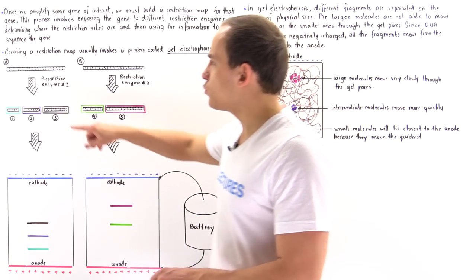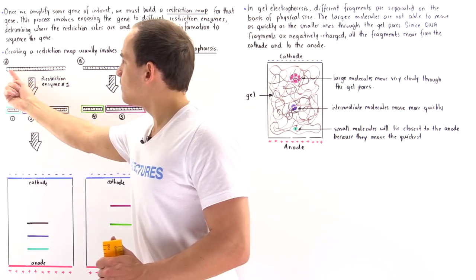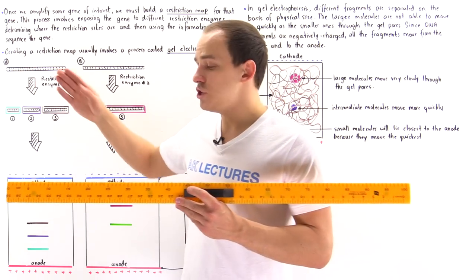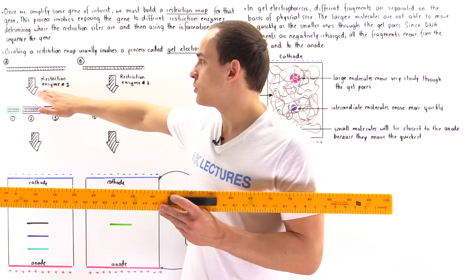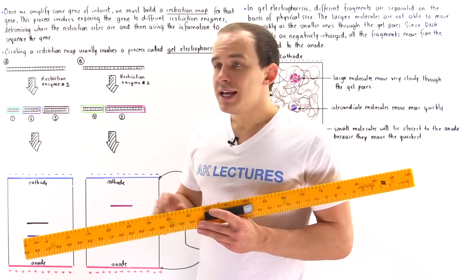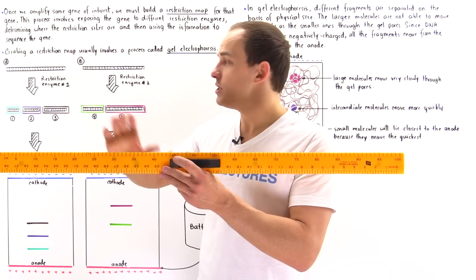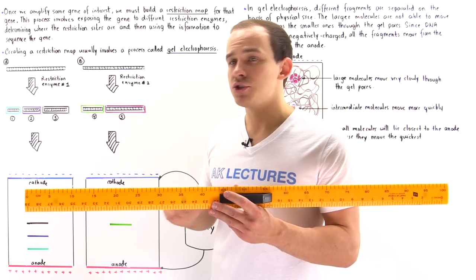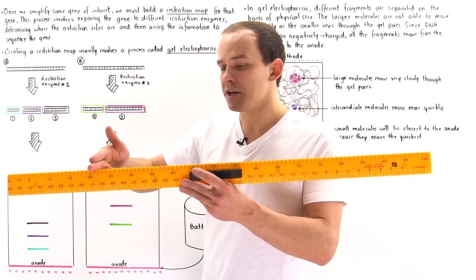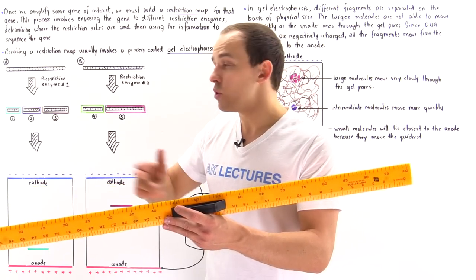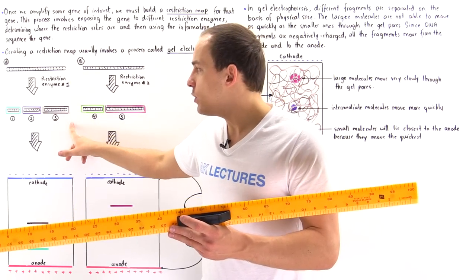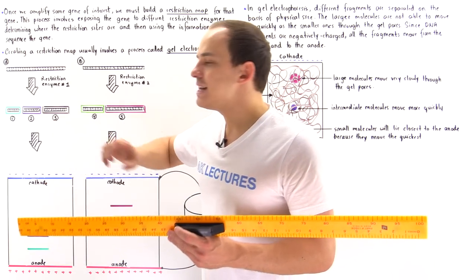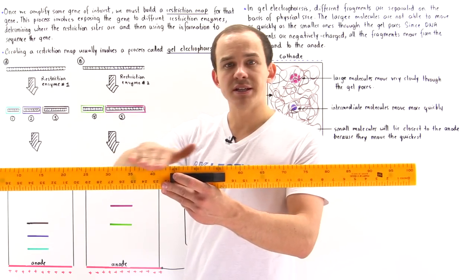Let's look at diagram A. In diagram A, we have the following gene shown in black. Let's suppose we expose this gene to a specific type of restriction enzyme — enzyme number one. Once we expose the gene to this restriction enzyme, it cuts or cleaves the gene at two different locations, somewhere here and somewhere here. So at the end, we get three different DNA fragments: DNA fragment one, DNA fragment two, and DNA fragment three — all coming from this entire gene.